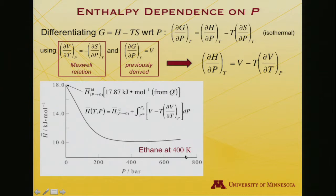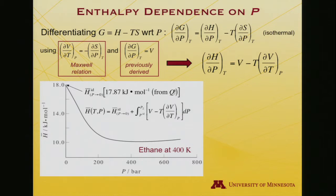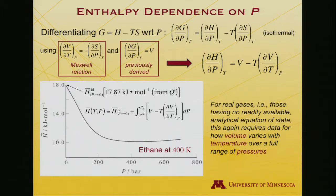Here is the sort of data I might derive from using experimental equation of state data — ethane once more at 400 Kelvin. The ideal enthalpy, which I can get from a partition function, is 17.87 kilojoules per mole. The behavior as I integrate is less easy to explain intuitively: there is a balance of PV and internal energy — it goes down for a while, then flattens, and then actually seems to be rising again at very high pressures. For a real gas without a simple equation of state, we have to look up these volume-temperature-pressure relationships from experiments, but once they are available, they are available for all time.